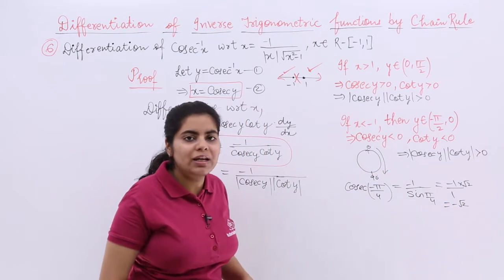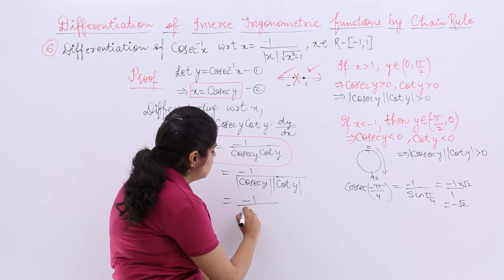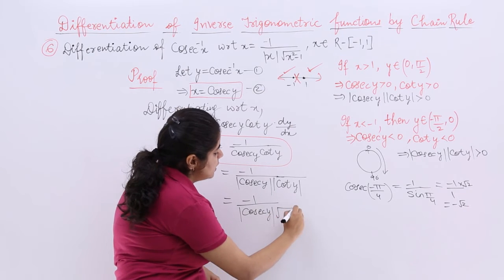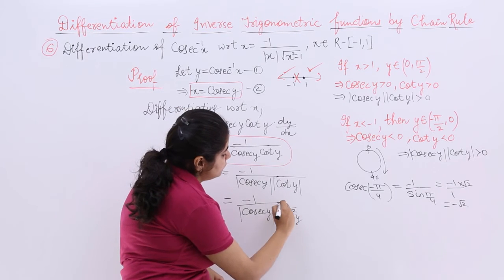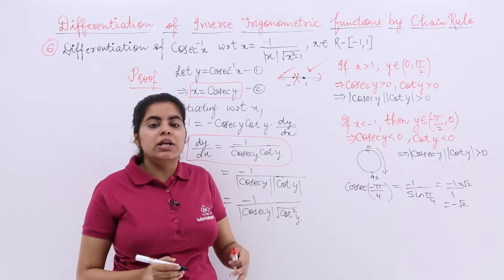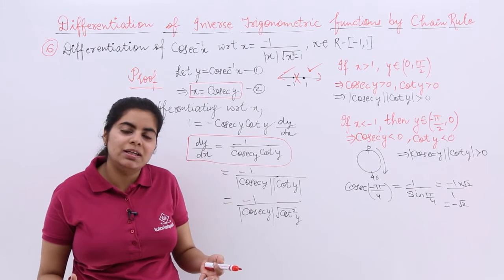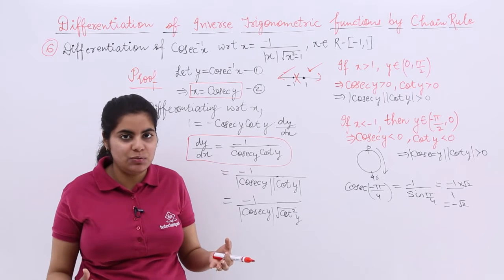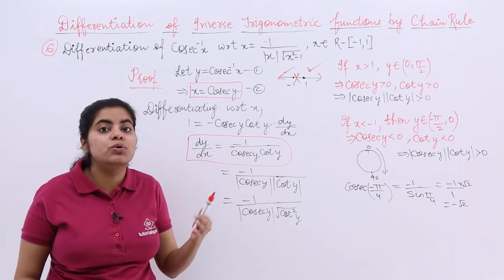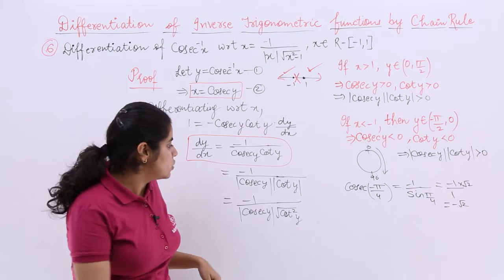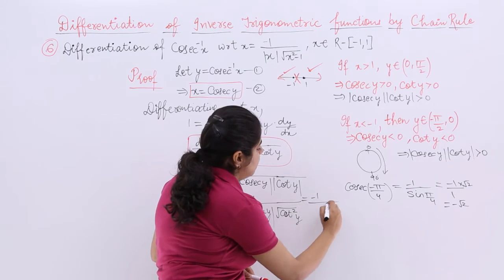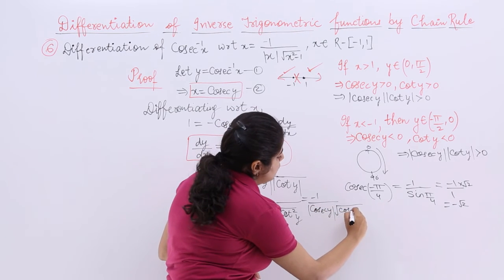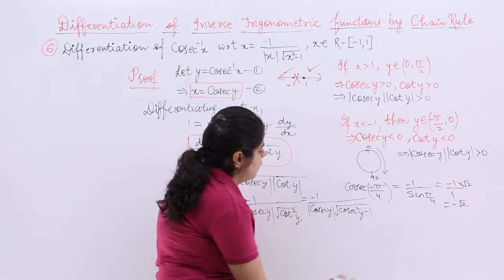Since both cases give a positive product, we can manipulate: cosecant y remains as is, and cot y becomes under root of cot squared y. Using the identity cosecant squared theta minus cot squared theta equals 1, cot squared y equals cosecant squared y minus 1. So dy/dx equals minus 1 upon cosecant y times under root of cosecant squared y minus 1.